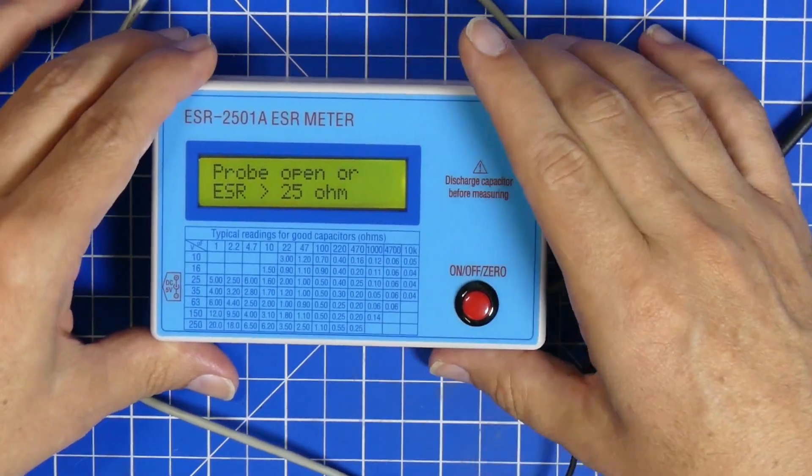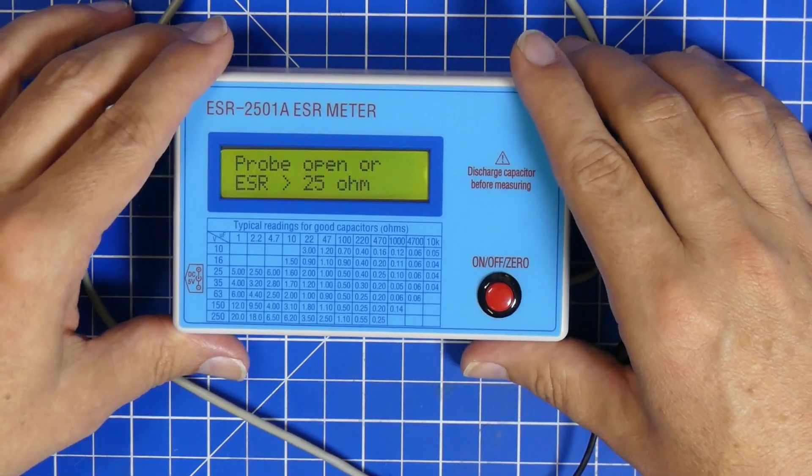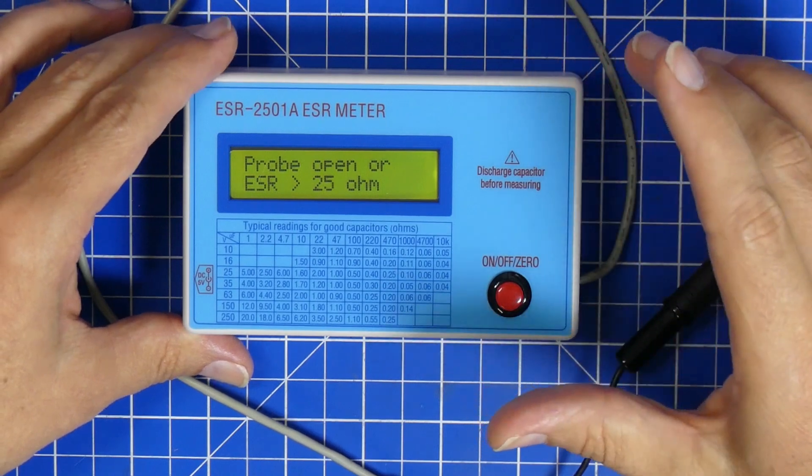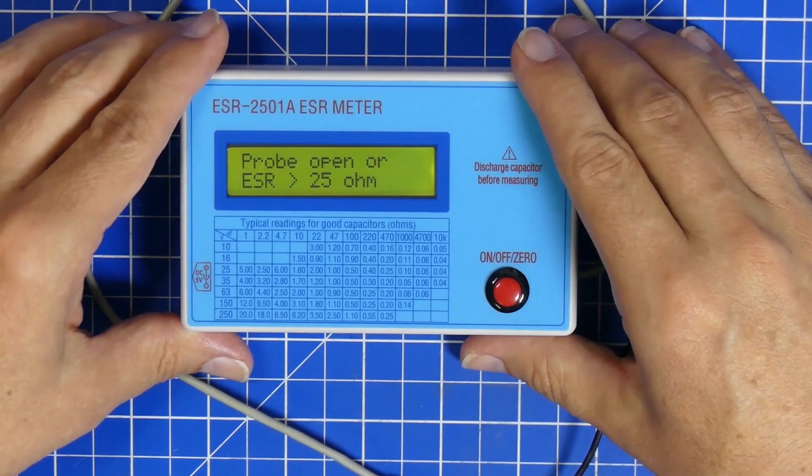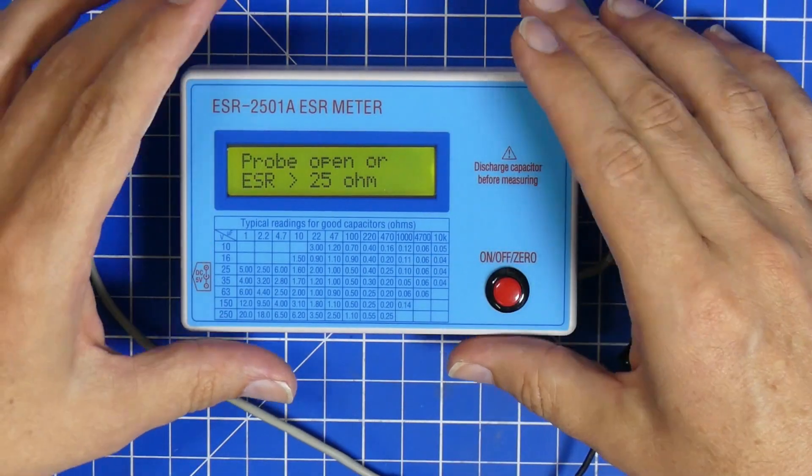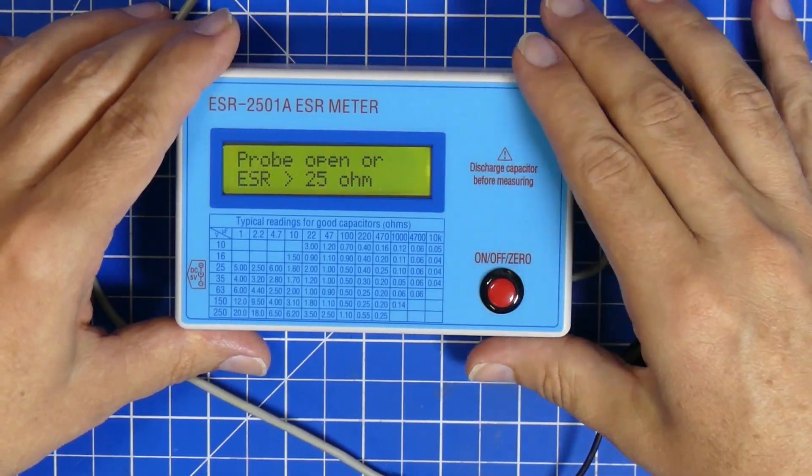I did get this one on eBay, but nowadays they're available everywhere. Just search for in-circuit ESR meter and you'll find one. They're not expensive.